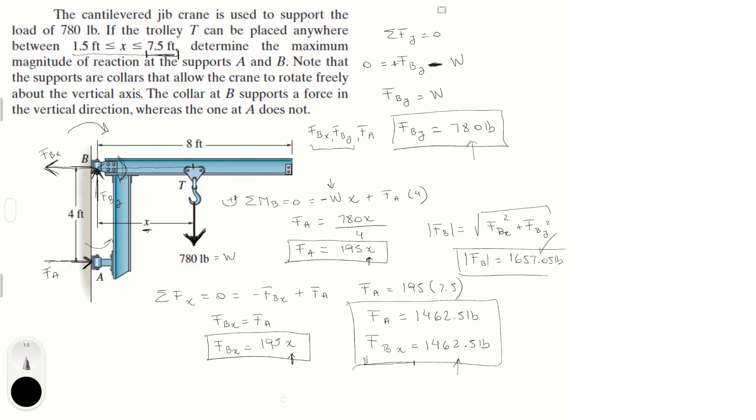And final answer for the maximum magnitude of B, and the maximum magnitude of A is 1462.5 pounds, because it only has a horizontal component. And again, these are the maximums, because if you were to make x less than 7.5, then all these numbers would go down, except of course F of B of y, that one would stay down.